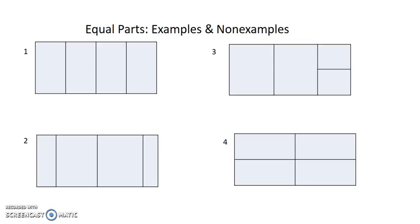Let's look at some more examples and non-examples. Which shapes are examples of partitioning into equal parts? Number one and number four are each partitioned into four equal parts — they are examples. Why are number two and number three non-examples? Both number two and number three are not partitioned into equal size parts.